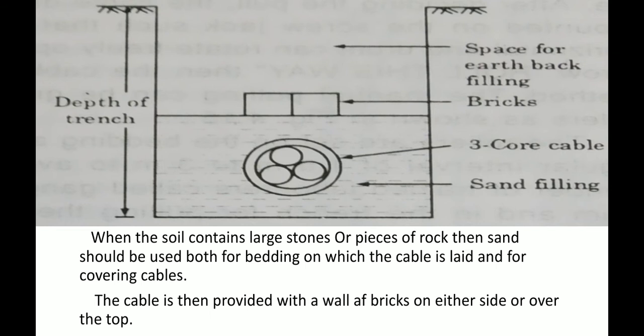The depth of the trench depends on the number of cables and the voltage level. After laying 3 to 4 cables, sand filling is used. The space above is then backfilled with soil. When the soil contains large stones or pieces of rock, sand should be used for bedding and for covering the cable.